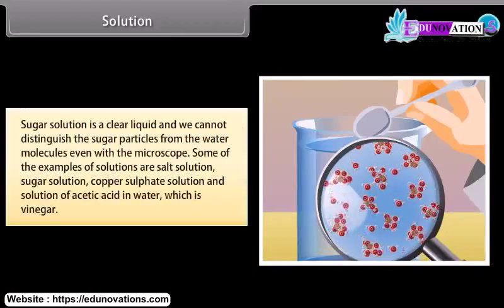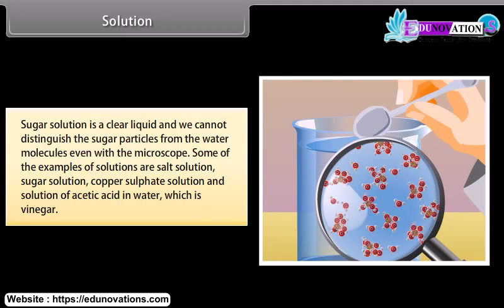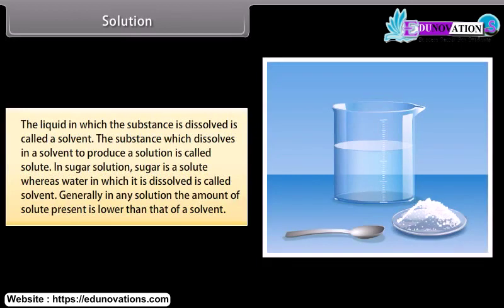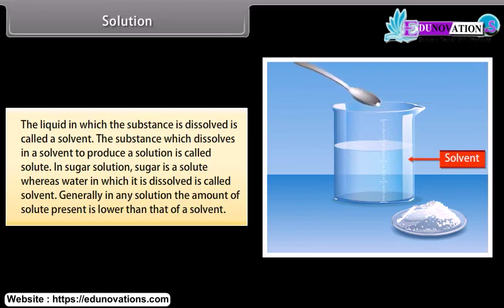Sugar solution is a clear liquid and we cannot distinguish the sugar particles from the water molecules even with a microscope. Some examples of solutions are salt solution, sugar solution, copper sulfate solution, and a solution of acetic acid in water, which is vinegar. The liquid in which the substance is dissolved is called the solvent; the substance which dissolves in the solvent to produce a solution is called the solute. In sugar solution, sugar is the solute whereas water is the solvent. Generally, the amount of solute present is lower than that of the solvent.